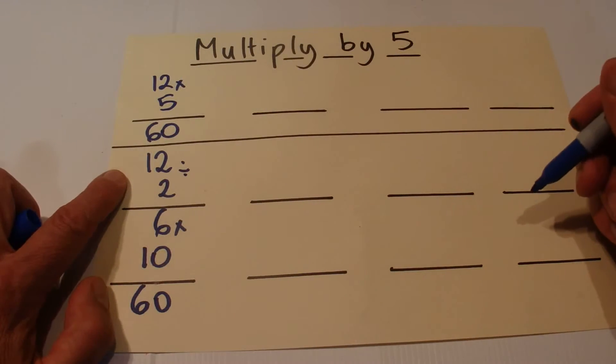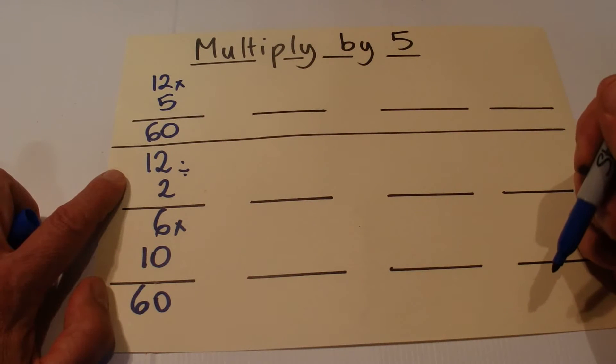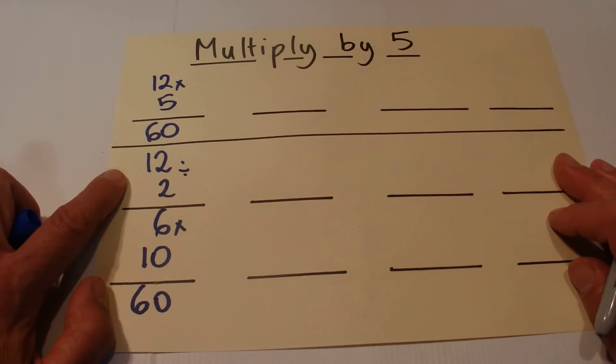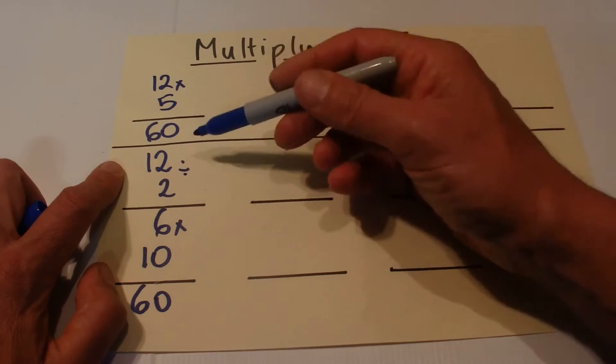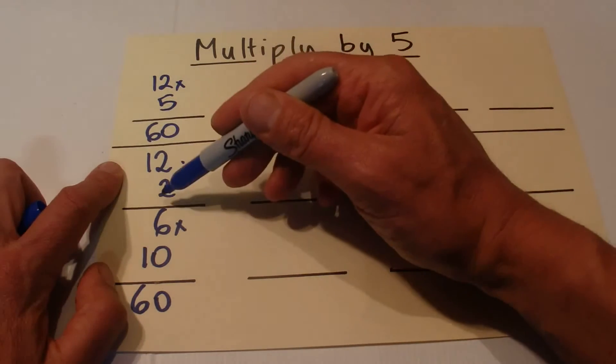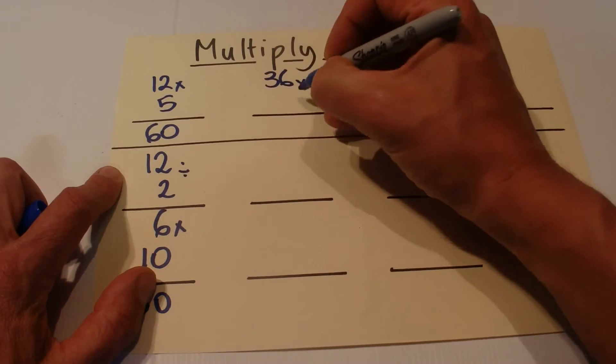But all of this is things that you should be able to do in your head or could be able to do in your head because it's a fairly simple calculation. Multiplying by 5 is the same as halving it and multiplying by 10.